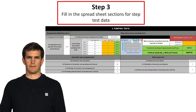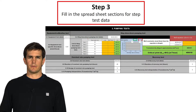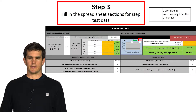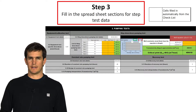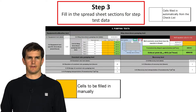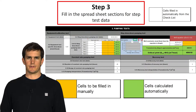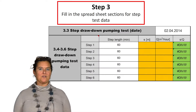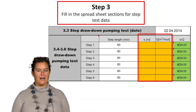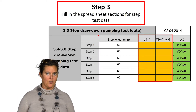Let us look at it now. It might look a bit scary but it is actually fairly simple. You can see that the white cells show the data you have inputted in the checklist, which has been automatically transferred. Now all you have to do is fill in the yellow cells manually with your pump testing data, and the green cells will be automatically calculated and will give you the desired results. What we need to do now is fill in the drawdown and the pumping rate for each of the steps.